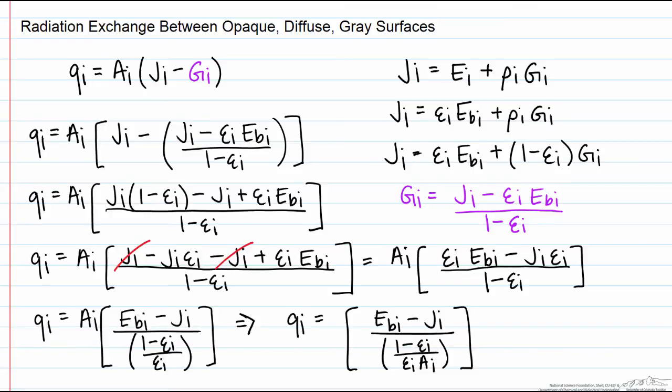And finally we can simplify this to our emissive power of the black body minus the radiosity divided by 1 minus the emissivity divided by the area of the surface times the emissivity.